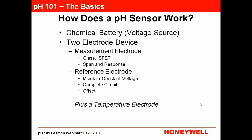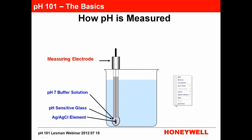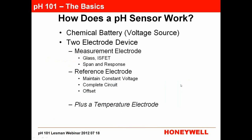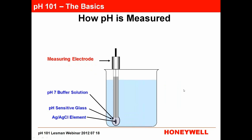If your sensor creeps up slowly when moving between buffers, that's a response issue — also related to the glass measuring electrode. The other electrode is the reference electrode, which maintains a constant voltage to be compared to the varying voltage on the measuring electrode, and it completes the electrical circuit. You have to have both a measuring and a reference electrode to have a complete circuit for current to flow. You'll also have a temperature sensor as well.